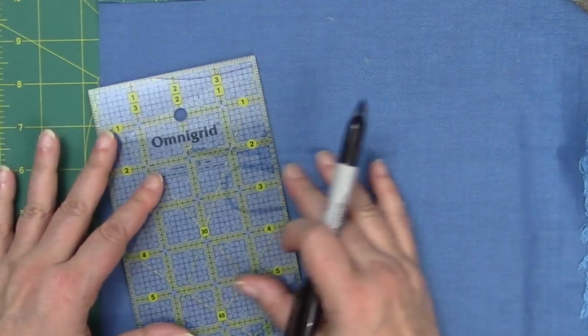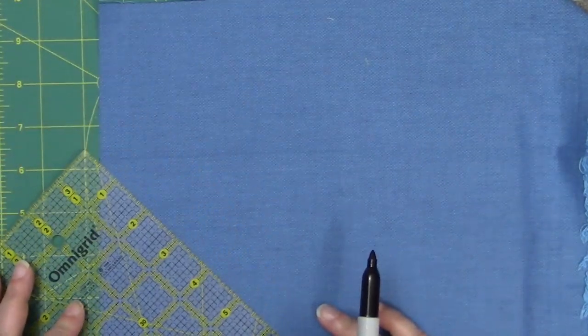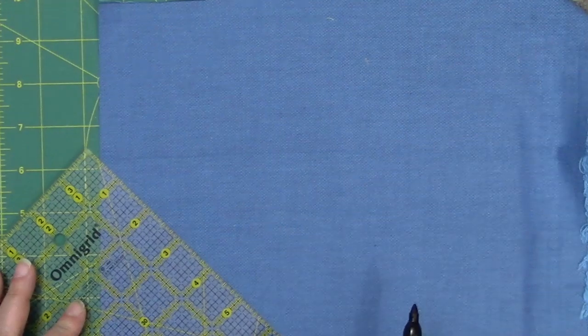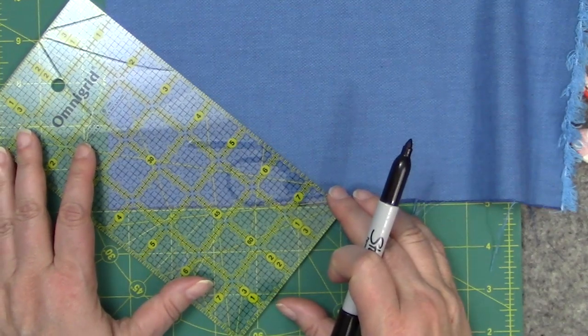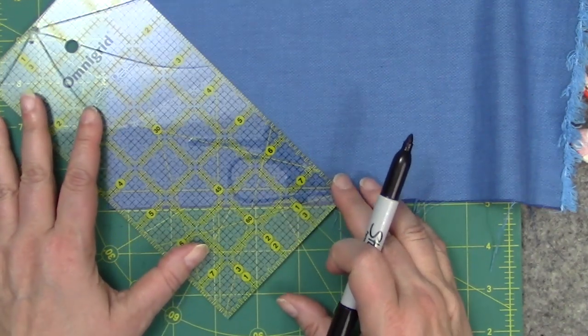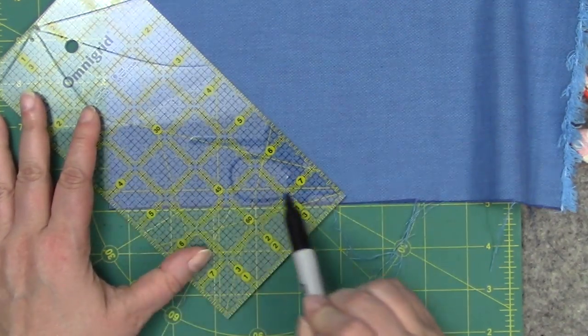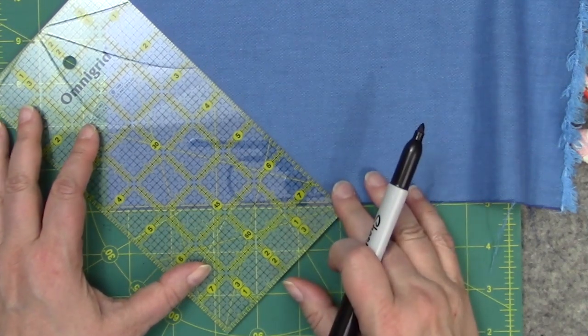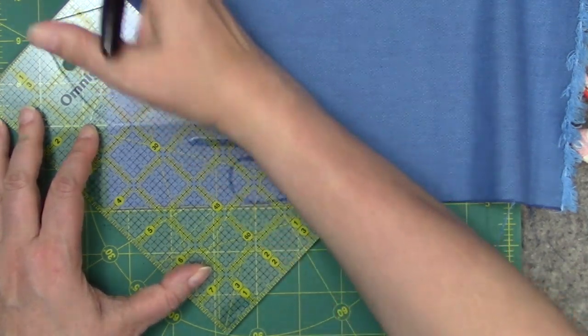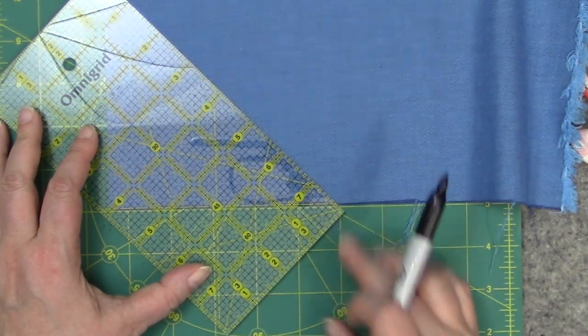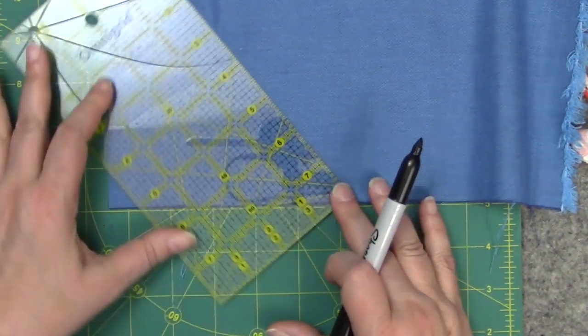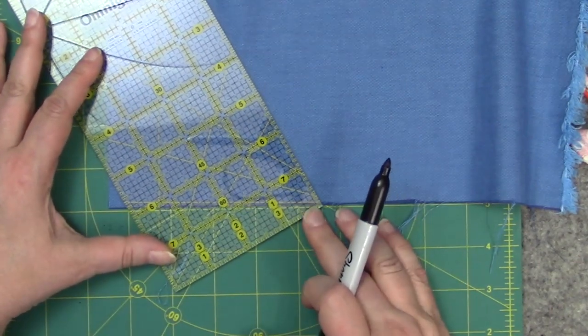So what you would do is if I wanted to cut a 45 degree angle, then I would line up that 45 degree angle on the bottom. So that's my 45 degree line, do you see my 45 degree line right there? I would line that up on the bottom and then I would cut, and I would know that this angle is a 45 degree angle. Same with 30, same with 60.